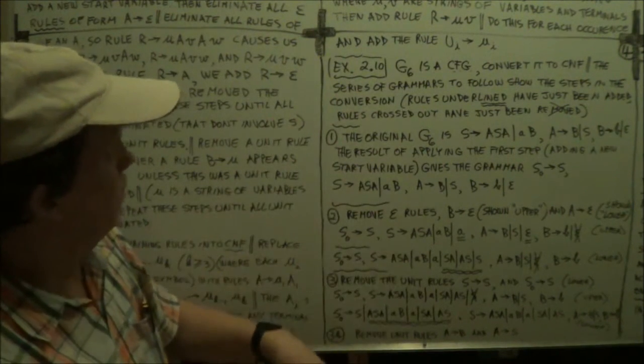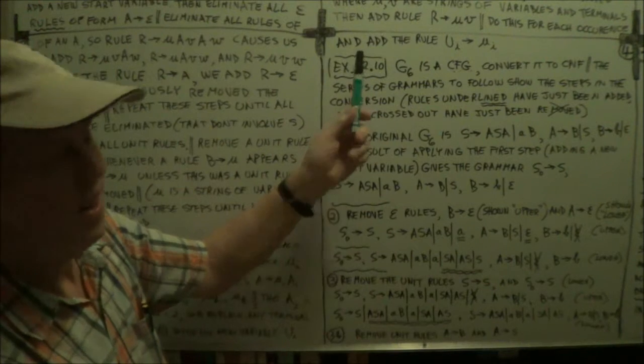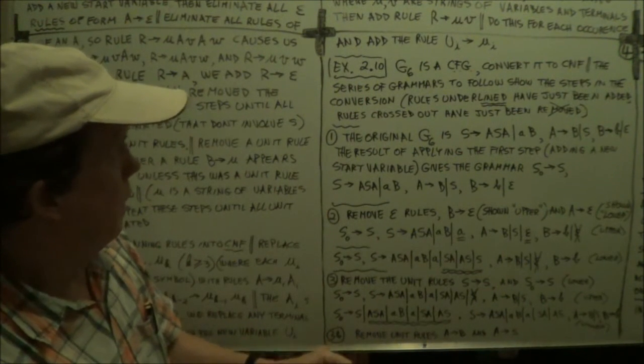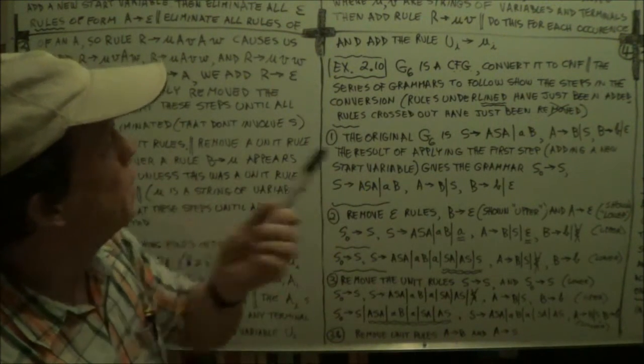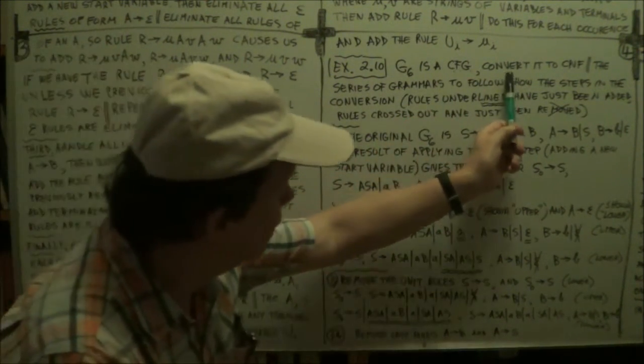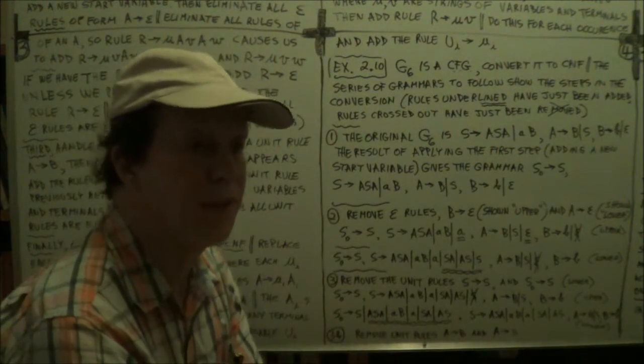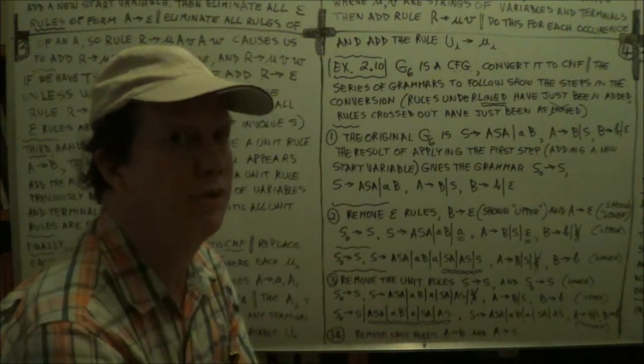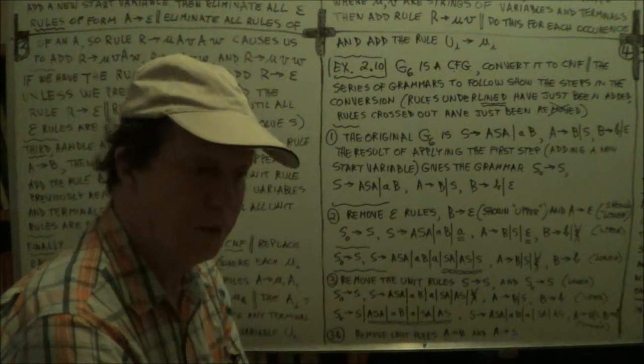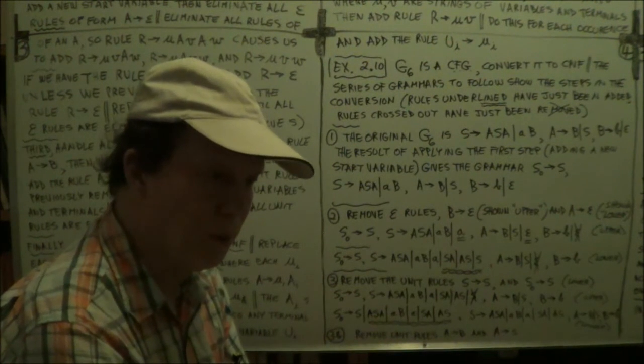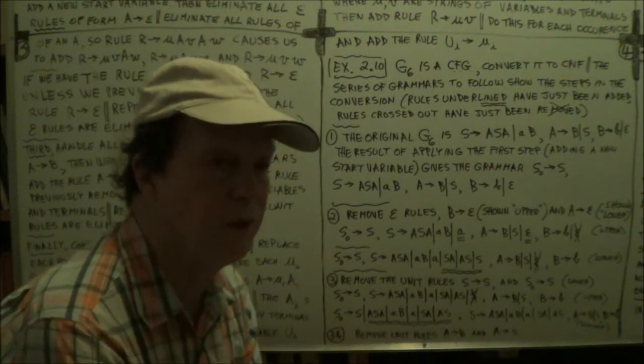So we're going to do an example now, in the text 2.1, chapter 2, the tenth thing in the chapter. Now, we're asked to convert this grammar, convert it into CNF, into that form, the standard form, the Chomsky normal form. In other words, the right hand side, either two variables, or one terminal. Very, very simple.